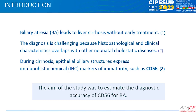During cirrhosis, biliary epithelial structures express immunohistochemical markers of immaturity, such as CD56. The study aimed to estimate the diagnostic accuracy of CD56 for biliary atresia.